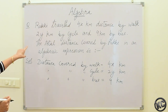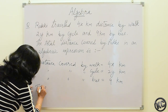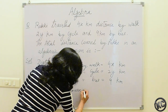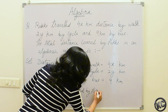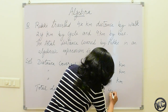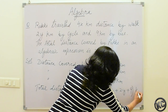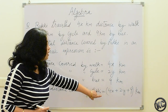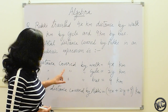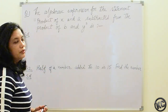Now we have to find the total distance covered by Raki in an algebraic expression. The total distance covered by Raki is equal to the addition of all these: 4x plus 2x plus 9 km. So this is the algebraic expression for this question — the total distance covered by Raki: 4x plus 2x plus 9 km. Let us do another question.